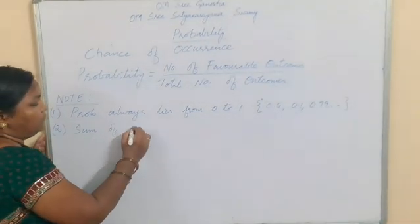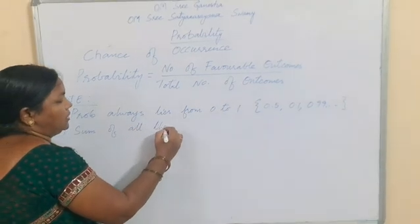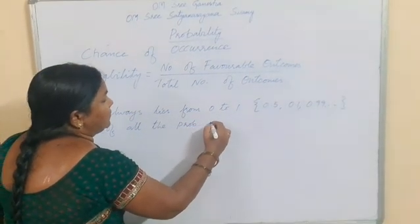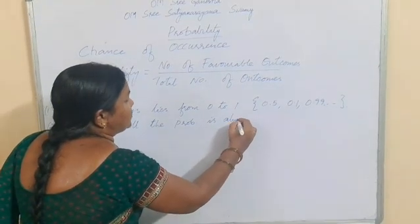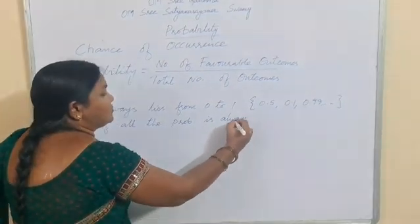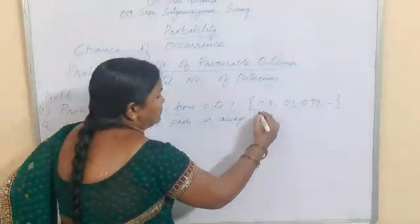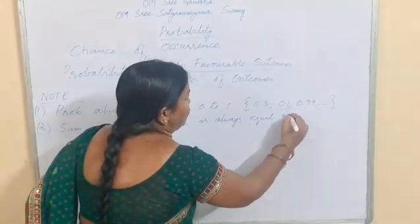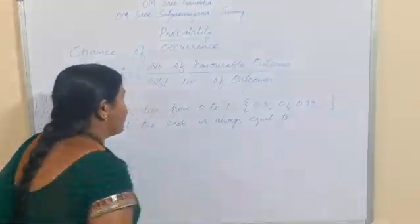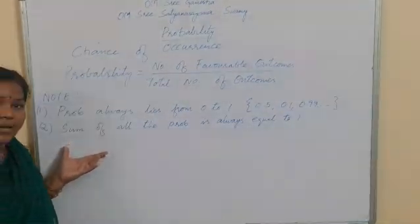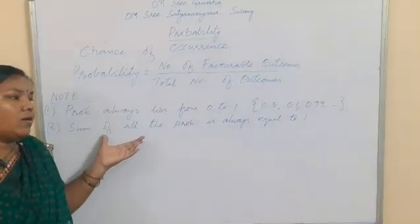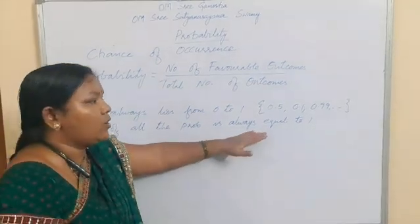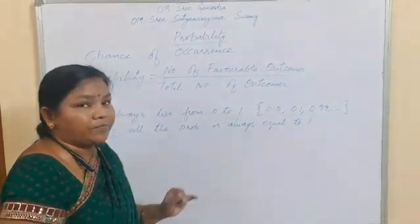The next condition is the sum of all the probabilities. When we add all the probabilities — that is, when we add all the chances — then the result will always equal to 1.